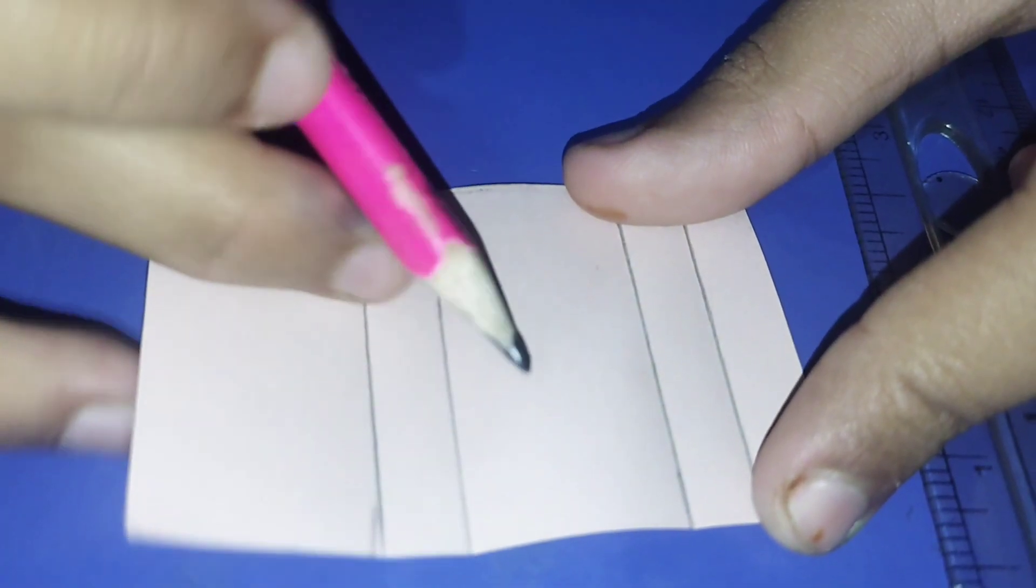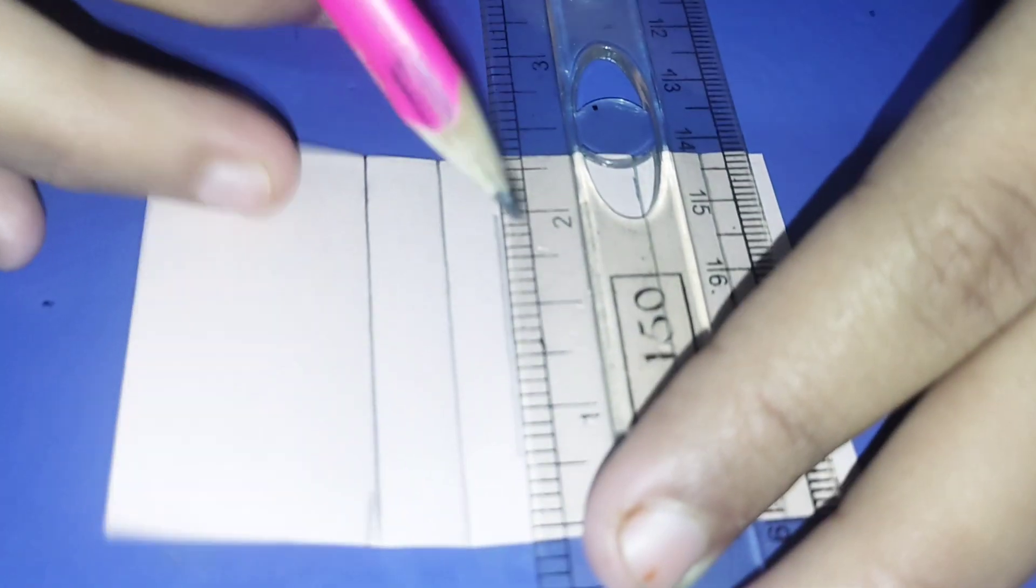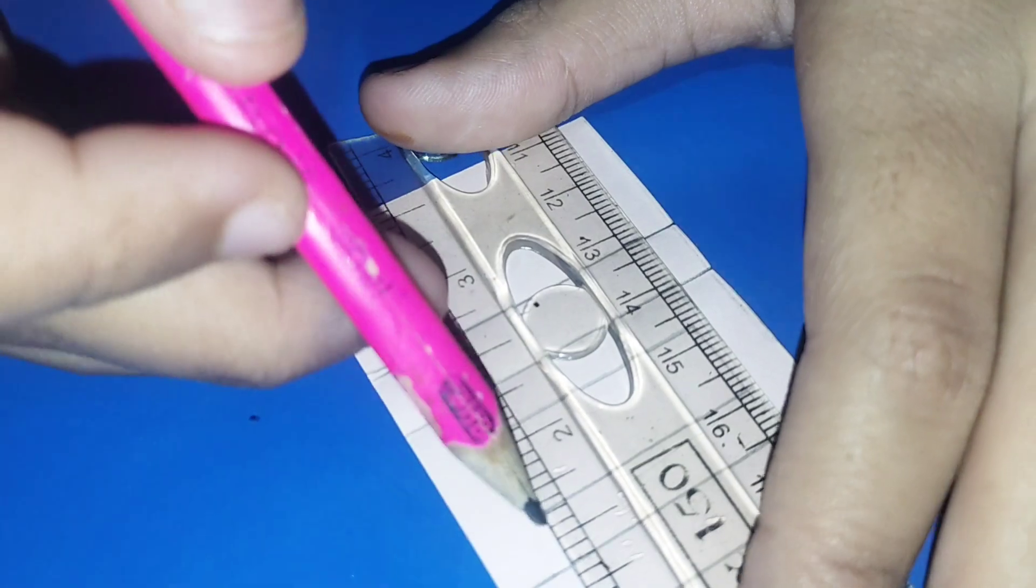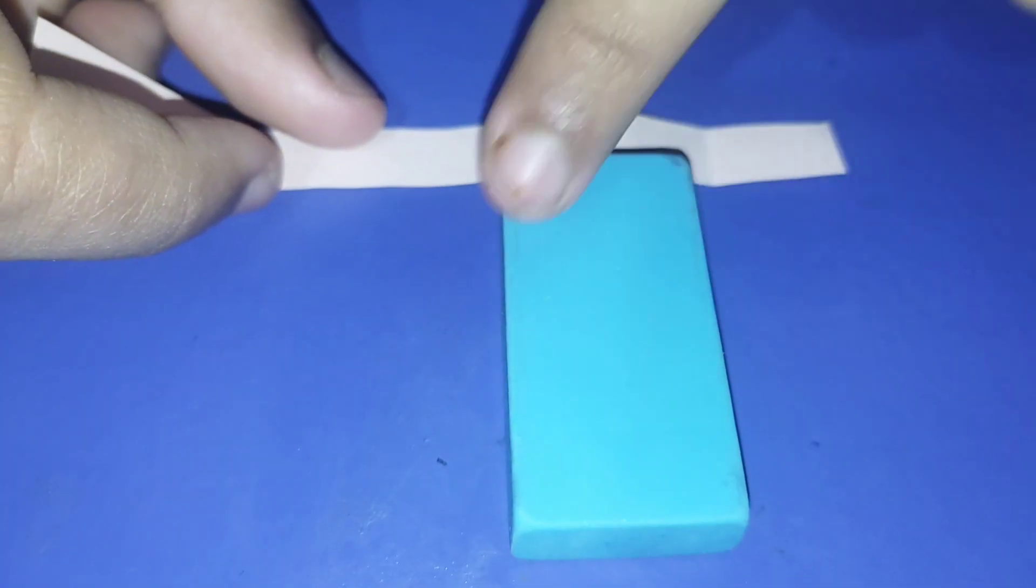So friends, this middle part is in the center of the lines. We have drawn lines in the middle, so here I have cut it from the center.